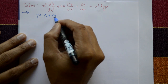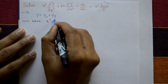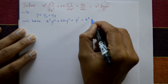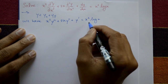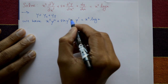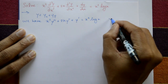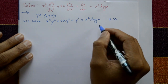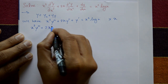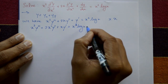The given equation is x²y''' + 3xy'' + y' = x²·log x. This is not a standard Cauchy's linear equation. The standard form requires x³y''', x²y'', and xy'. So multiply the whole equation by x, giving x³y''' + 3x²y'' + xy' = x³·log x.